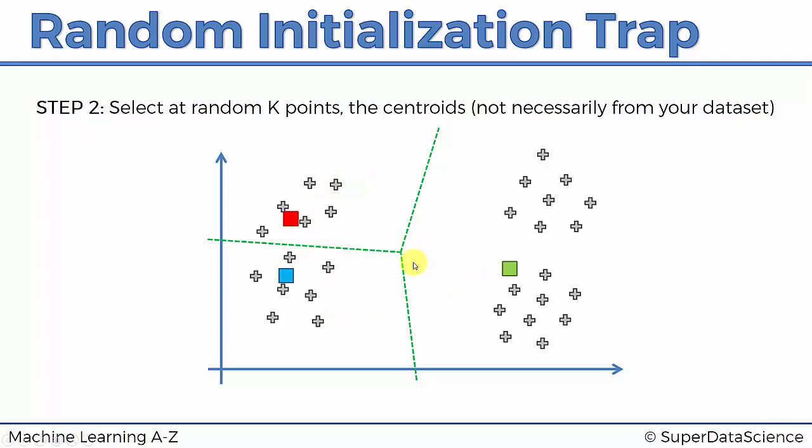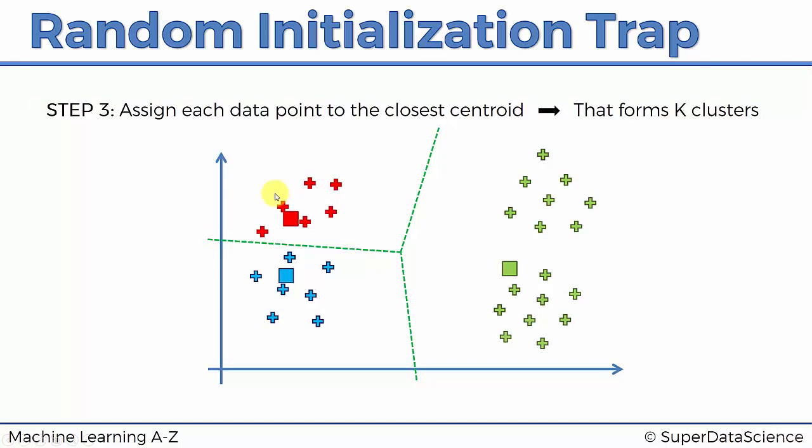We're going to use these lines to say anything in this part of the chart is going to be closest to red, just because these are equidistant lines. Anything in this part of the chart is going to be green, anything in this part of the chart is going to be blue. It'll just save us time. So based on this method, we can tell right away that this is the red cluster for now, this is the blue, this is the green.